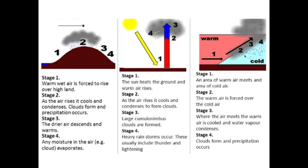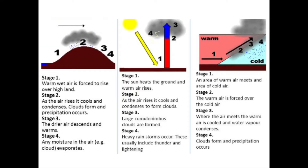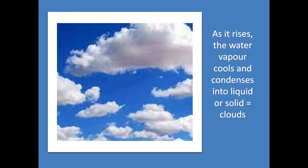So the air rises for three different reasons, but the end result is that it cools down. The water vapour condenses, and it either becomes a liquid — droplets of water — or it becomes a solid, which would be an ice crystal or a snowflake. And that, ladies and gents, is where your clouds come from. A cloud is just a collection of water droplets or ice crystals. That's the first important thing: air rises for three different reasons, but the end result is the same — a cloud.